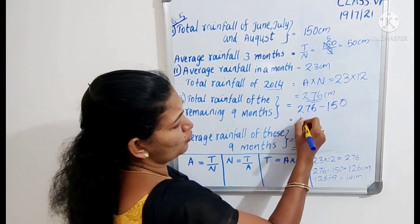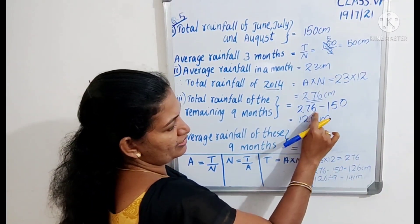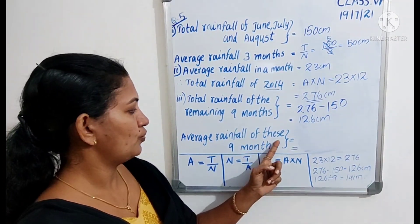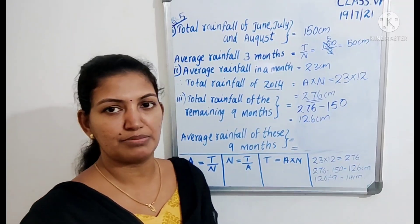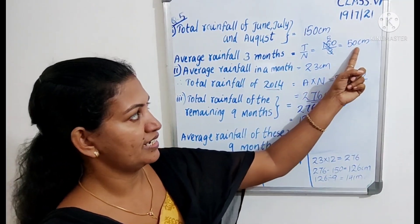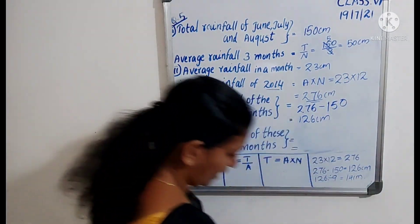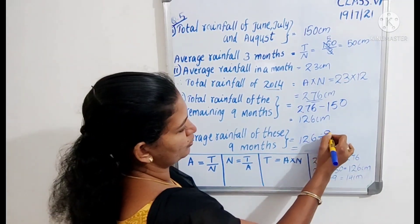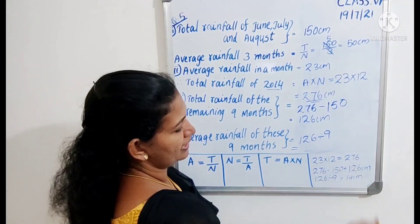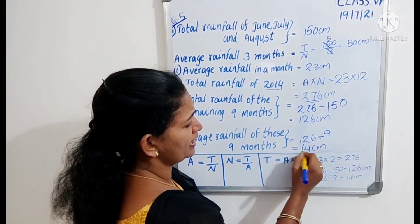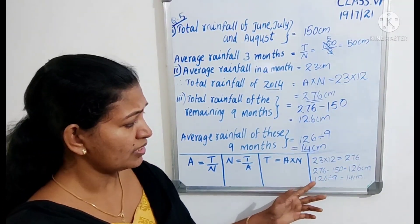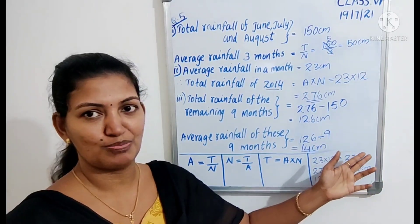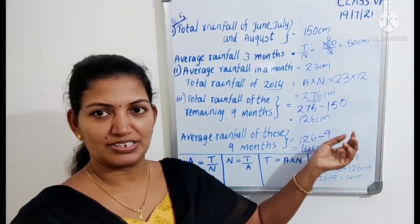276 minus 150 is equal to 126 cm. The total rainfall of the remaining 9 months is 126 cm. The average rainfall of these 9 months is 126 divided by 9, which gives 14 cm. You will see these steps; I have not shown the multiplication, subtraction, and division because there is no space — it is a very small board. You can do it yourself; these are very simple calculations.